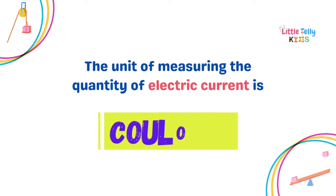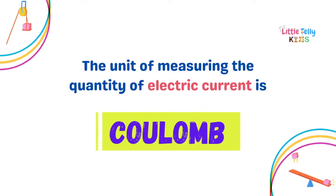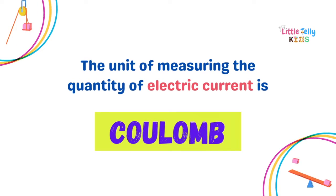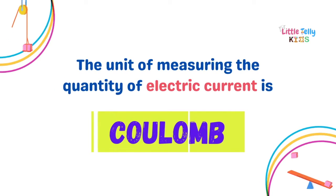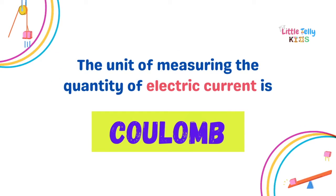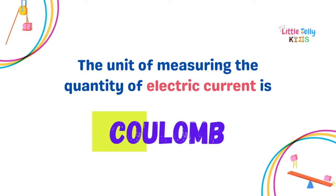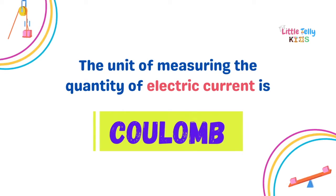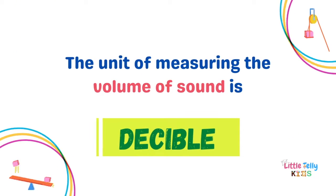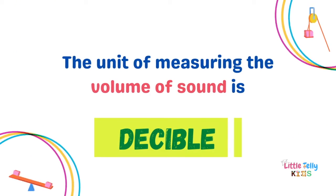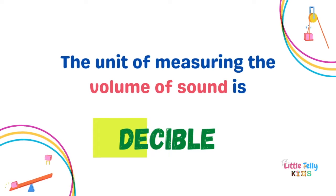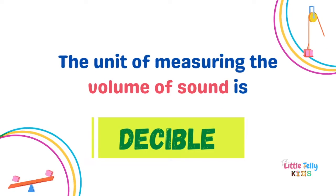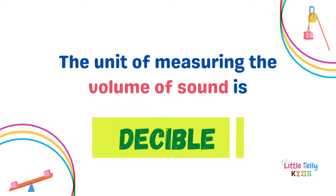The unit of measuring the quantity of electric current is Coulomb. The unit of measuring the volume of sound is Decibel.